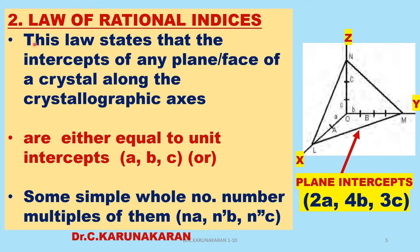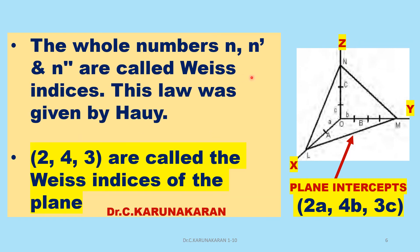According to this law, the intercepts of any plane or face of a crystal along the crystallographic axes are either equal to the unit intercepts, or some whole number multiple of the unit intercepts A, B, and C. For example, the intercepts are nA, n'B, n''C, where n, n', and n'' are simple whole numbers. These whole numbers are called the Weiss indices of the plane.